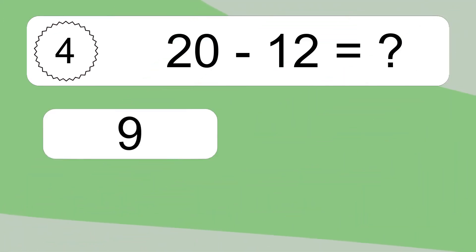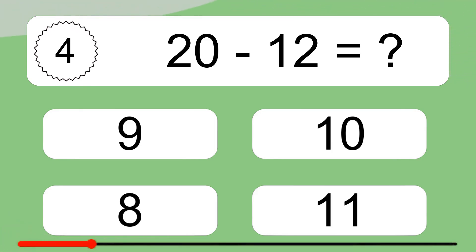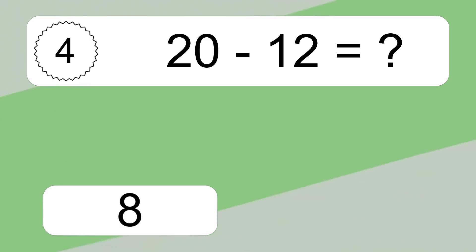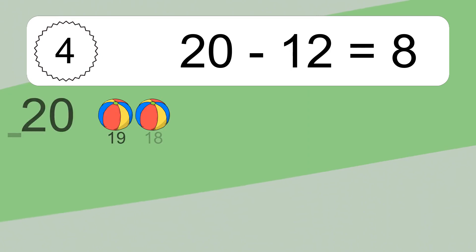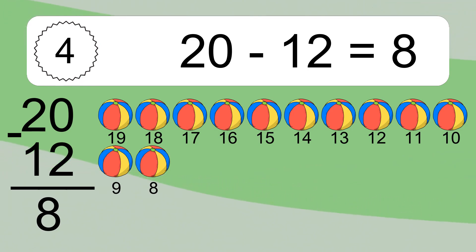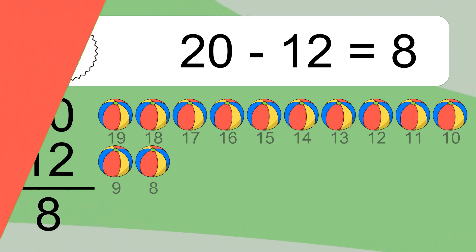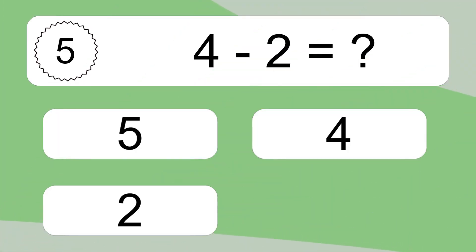20 minus 12 equals what? 20 minus 12 equals 8. Let's count it: 19, 18, 17, 16, 15, 14, 13, 12, 11, 10, 9, 8.